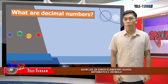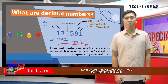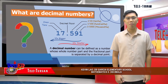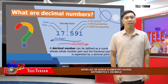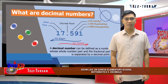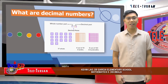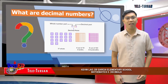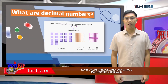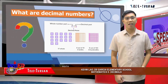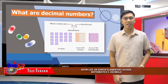Do you know what a decimal number is? A decimal number can be defined as a number whose whole number part and fractional part is separated by a decimal point. Decimal comes from the Latin word decimus, meaning ten, from the root word decim or ten. The decimal system, therefore, has ten as its base and is sometimes called a base ten system.